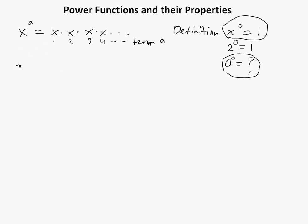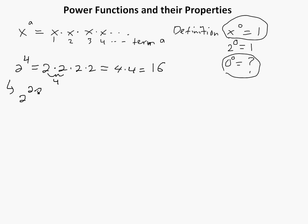Let's say we have 2 to the power of 4. This would just be 2 times 2 times 2 times 2, which equals 4 times 4, so 4 times 4 equals 16. What you could also do is write this as 2 times 2, as 2 to the power of 2, times 2 to the power of 2. That whole thing becomes 4, so you get 4 squared, and then 4 times 4 again equals 16.